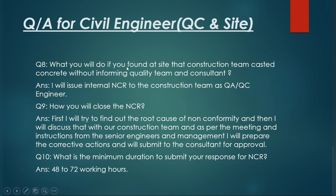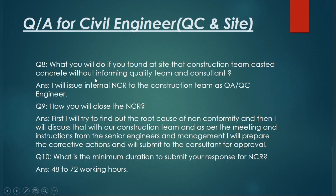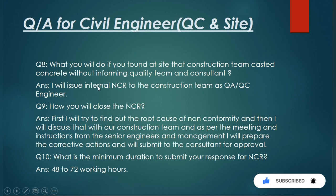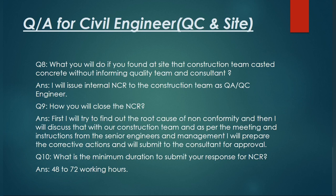Question number eight: what will you do if you find that the construction team cast concrete without informing the quality team and consultant? In my latest interview, the quality manager asked me this. My answer: I will issue an internal NCR — non-conformance report — to the construction team as a QC engineer. The construction team will then submit their corrective action. For unauthorized concrete casting, they must perform non-destructive testing first. If that fails, they must take a core sample from the cast concrete and check the compressive strength after 28 days.